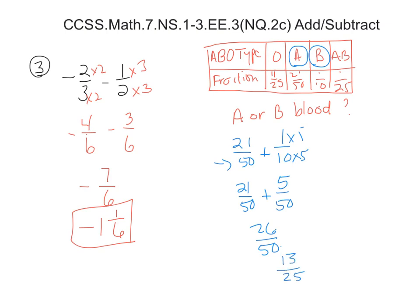We still need to check that because you don't have 1 in the numerator. Does 2 go into both numerator and denominator? No. Does 3? No. Does 13 go evenly into 25? No. So it's a common denominator fraction. It is done. The people who have A or B are 13 people out of 25.